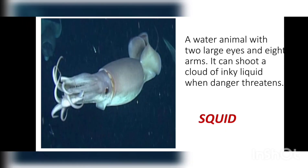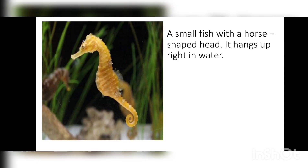The last animal is a small fish with a horse-shaped head. It hangs upright in water. The name of this animal is Seahorse. This is all we have studied about the lesser known animals — they are not very commonly known.